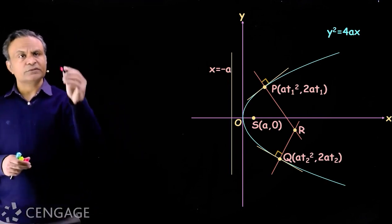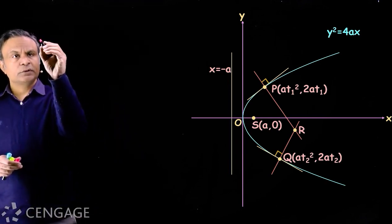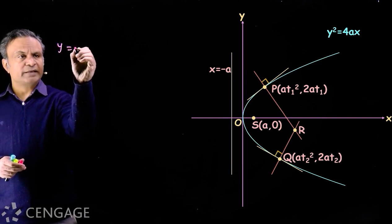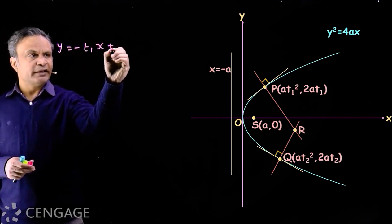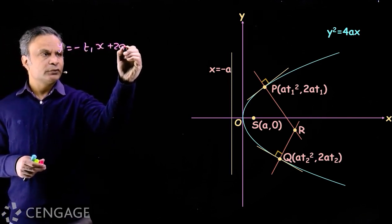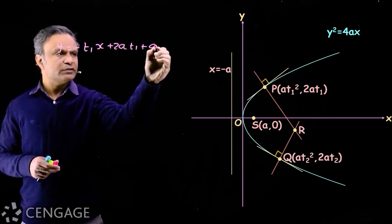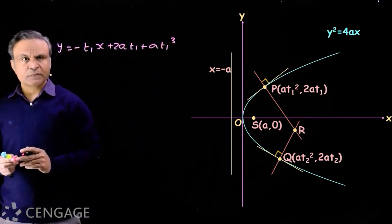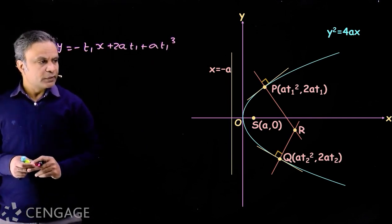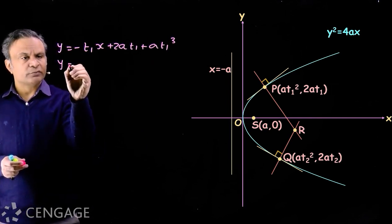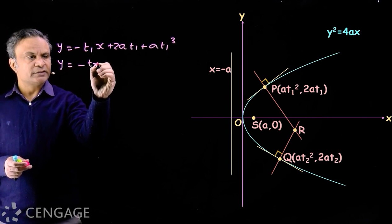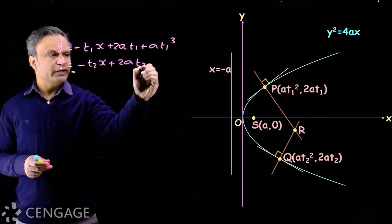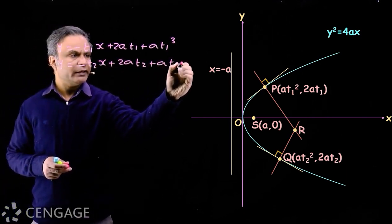The equation of normal at point P is: y = −t1·x + 2at1 + at1³. At point Q, the equation of normal is: y = −t2·x + 2at2 + at2³.